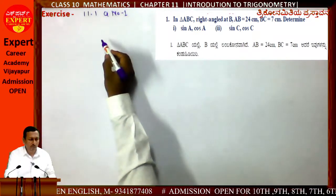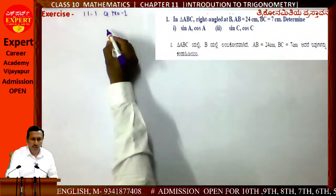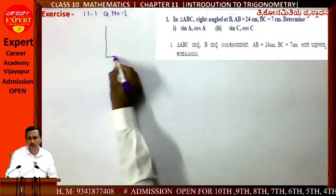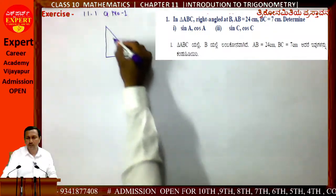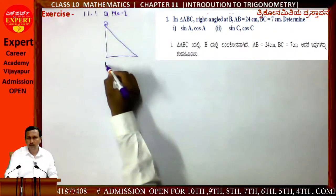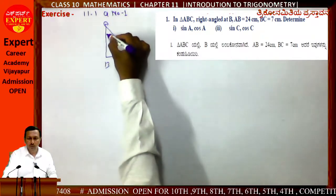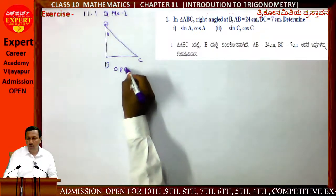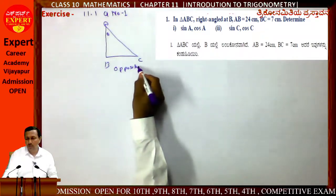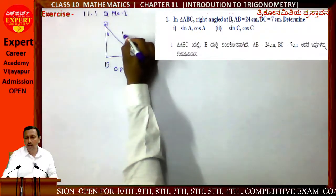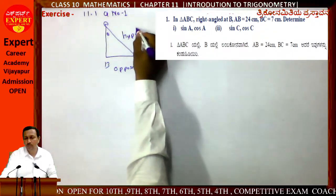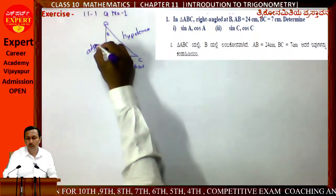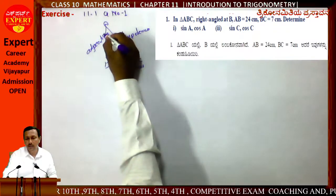Given a right angle triangle, first draw triangle ABC. Angle A is theta. Identify the opposite side, hypotenuse, and adjacent side with respect to angle A.